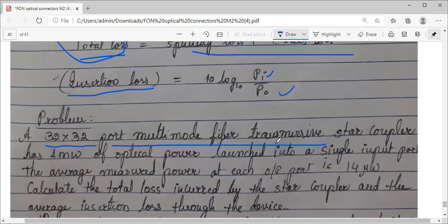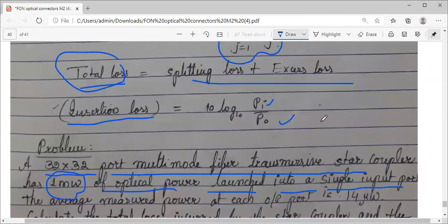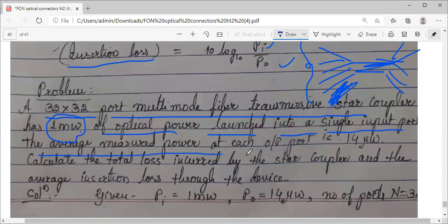How much input power you're giving: one milliwatt is launched into a single input port. So there's a bunch of 32 fibers, but you're applying power to only one fiber, one milliwatt power to any one port only. The average measured power at each output port is 14 microwatts.